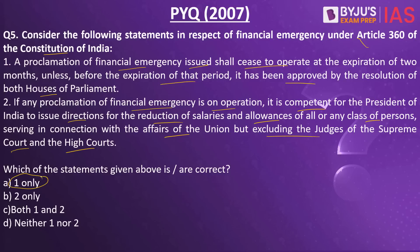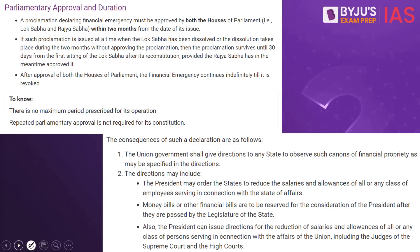Which of the statements is/are correct? The answer is one only. This is a previous year question from 2007. The first statement is right. The second statement is wrong — because it also includes Supreme Court judges as well as High Court judges; it does not exclude but includes the judges of the Supreme Court and the High Court. Which is why the first statement is right and the second statement is wrong.